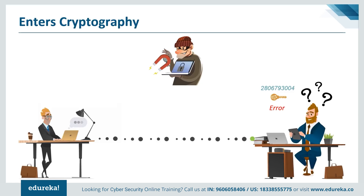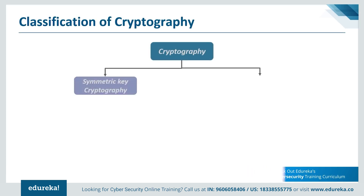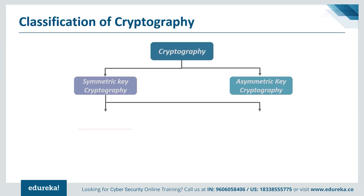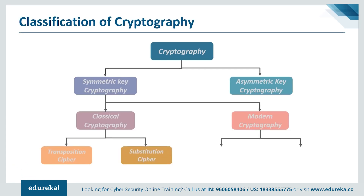The important thing to note is that in modern cryptography the security of the system purely relies on keeping the encryption and decryption keys secret. Based on the type of keys and encryption algorithms, cryptography is classified under the following categories. Cryptography is broadly classified under two categories: symmetric key cryptography and asymmetric key cryptography, popularly also known as public key cryptography. Symmetric key cryptography is further classified as classical cryptography and modern cryptography, where classical cryptography is divided into transposition cipher and substitution cipher, and modern cryptography is divided into stream cipher and block cipher.